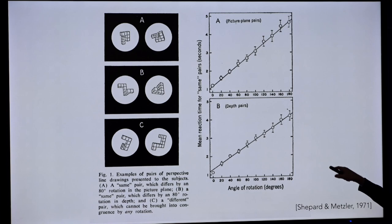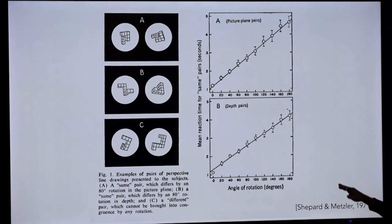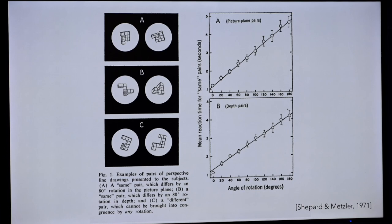Here are some examples of two different shapes that may or may not be the same. Participants seem to actually imagine the physical rotation process. If you look at their reaction time — how quickly they answered whether the shapes were the same — as a function of the angle of rotation between the two shapes, there's a linear relationship: the bigger the rotation angle in 3D, the longer it takes. That suggests, according to Metzler and Shepard, that you're actually rotating this three-dimensional object in your head.